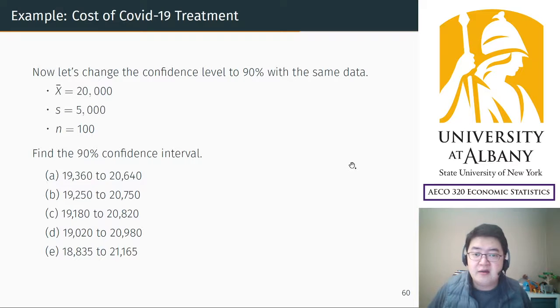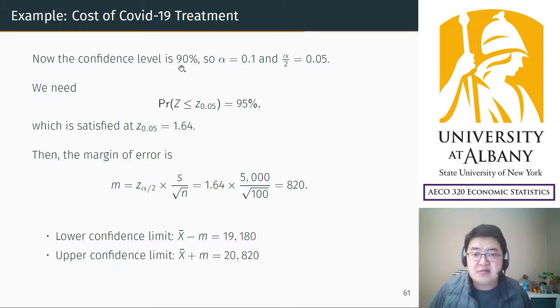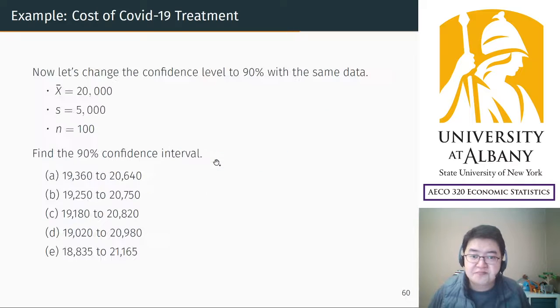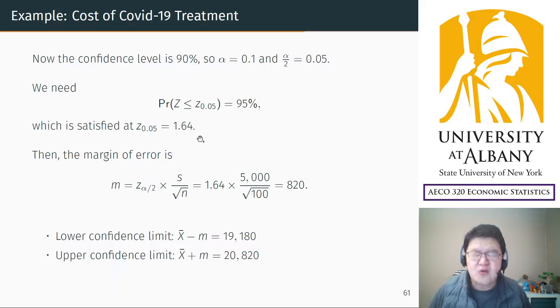Just use the formula and this is the answer. 90% is the confidence level, so error probability is 10%, its half is 5%. So you need to find cumulative probability equals 95%, which gives you 1.64. This is the z value you use for 90% confidence level. Then the margin of error is 820. It's much smaller because you reduced the confidence level.